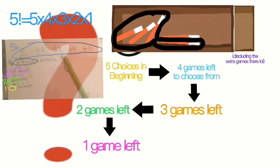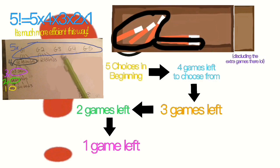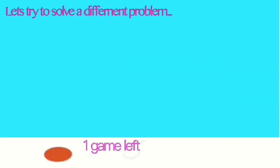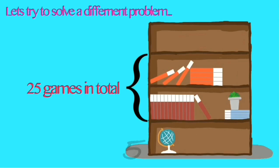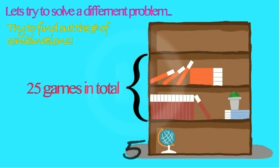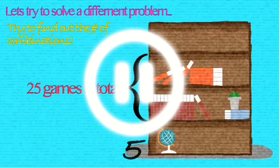Factorials are basically the equation form of the long list you were planning on making before. Now, let's say you have 25 games that you want to show off to your friends. Can you figure out how many ways you can rearrange the games? Pause the screen now to figure out the answer.